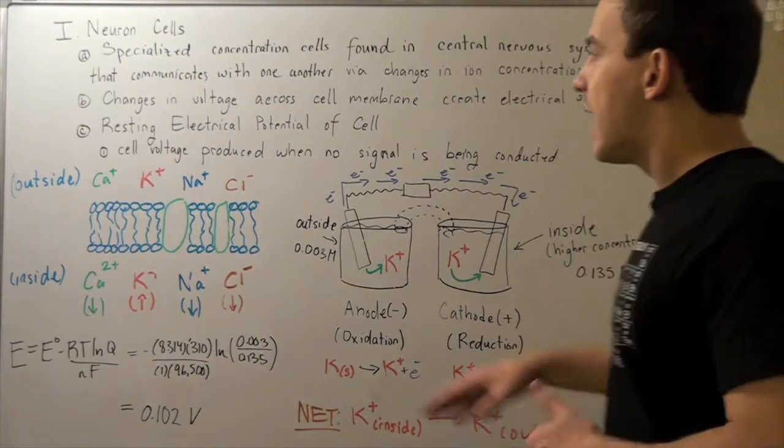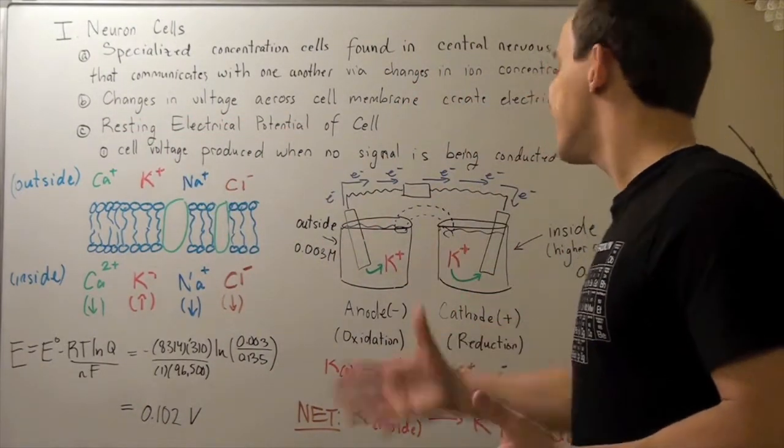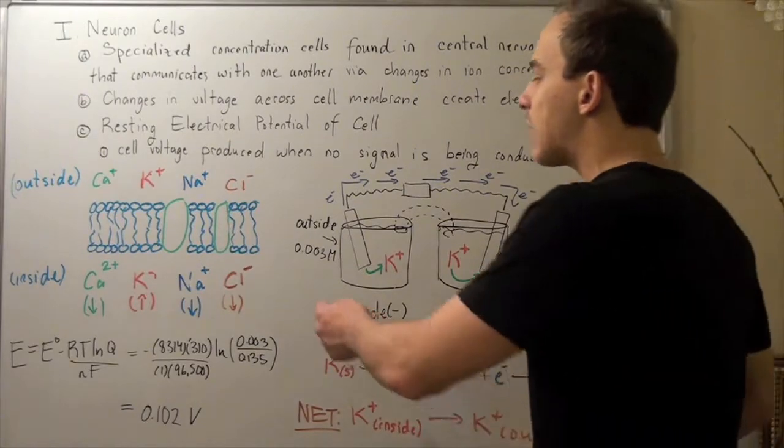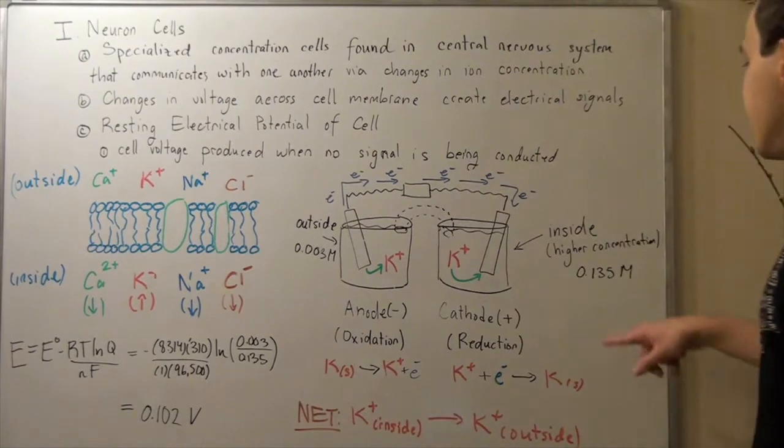Now, at any given time during the resting potential, our concentration on the outside is less than on the inside. So let's say our outside is 0.003 molar, and on the inside it's 0.135 molar.